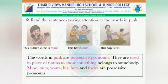Read the sentences paying attention to the words in pink. 'This Rubik's cube is mine. This bat is ours. This cap is his.' The words in pink are possessive pronouns. They are used in place of nouns to show something belongs to somebody — it shows ownership. Mine, ours, yours, his, hers and theirs are possessive pronouns.